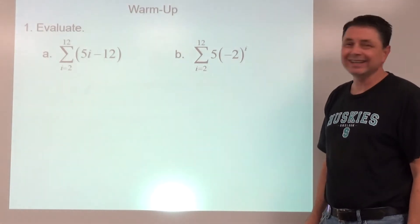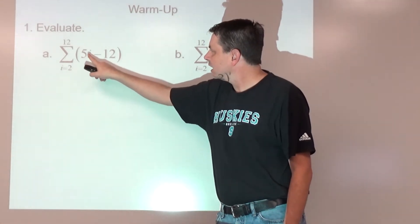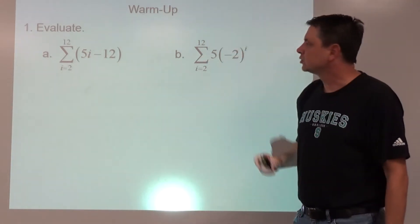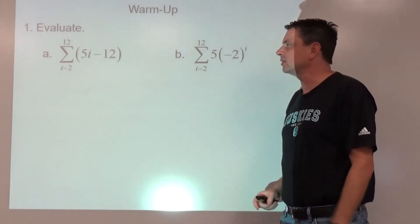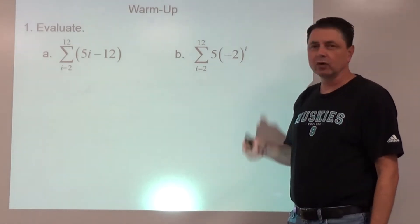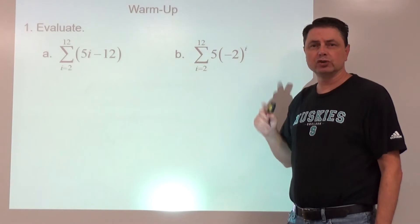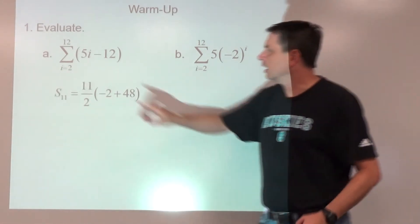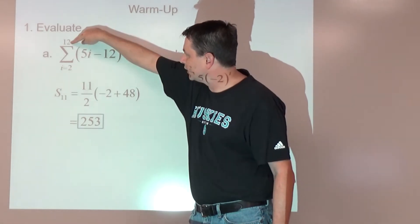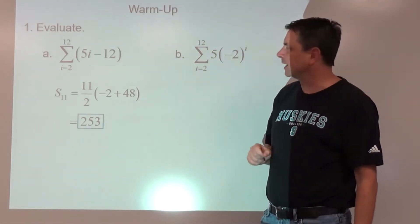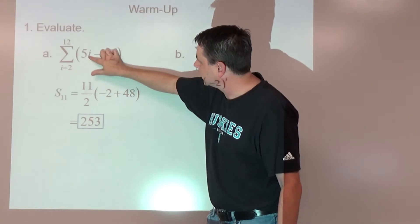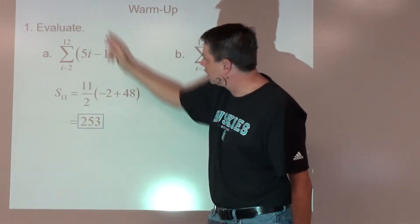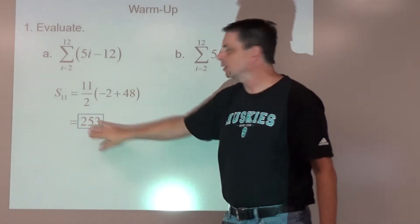Alright, number one is arithmetic. We know that because it's an a equals mx plus b situation. So that's going to lead to an arithmetic sequence. So the formula S sub n is equal to n over 2 times a sub 1 plus a sub n. If we start our count at 2 and finish at 12, that means there's going to be 11 things we're going to add up. First one, plug in a 2, we get negative 2. Last one, plug in a 12, we get 48. Add them up, you get 253.